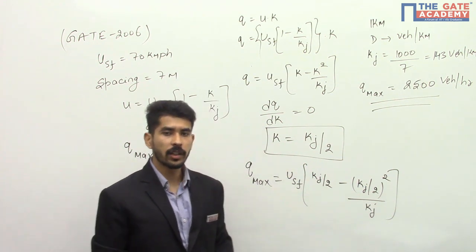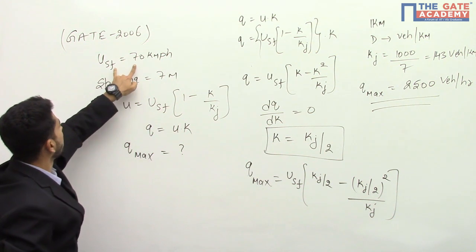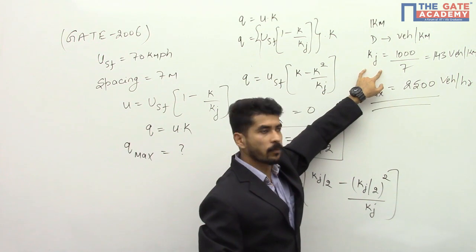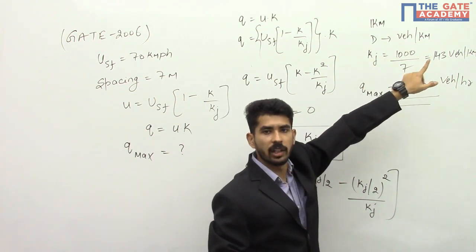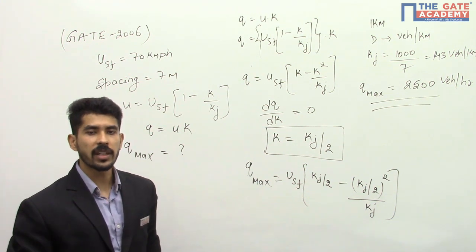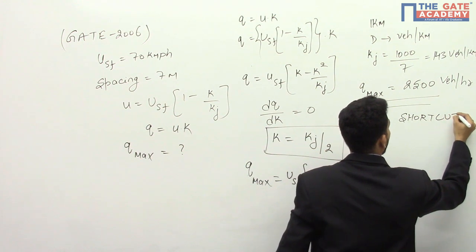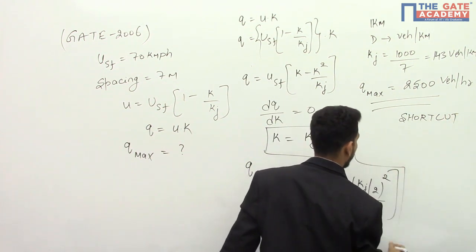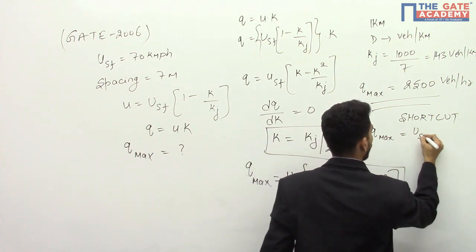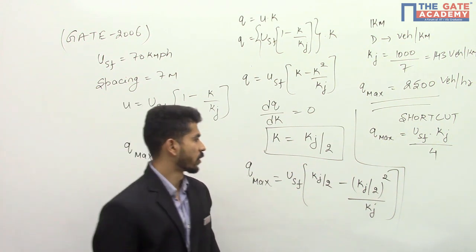Now if you want to apply a shortcut it is very simple. What you do is in the equation, usf equal to 70 kmph and just calculate the value of kj like this, 1000 divided by 7 that will give you kj. Once you know usf and once you know kj, we know that for q max it is equal to usf into kj divided by 4. We have a direct application of this.